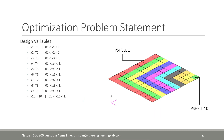Now let's talk about the optimization problem statement. This problem statement is a requirement before you start optimization — it's a summary of three components. The first is your design variables. The thickness of zone 1 will be design variable x1, zone 2 will be design variable x2, and so on until thickness 10 equals design variable x10.